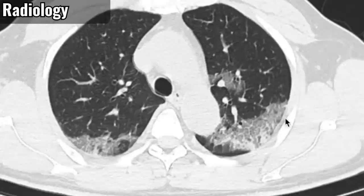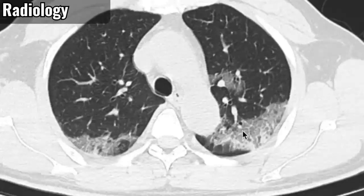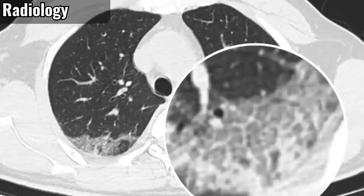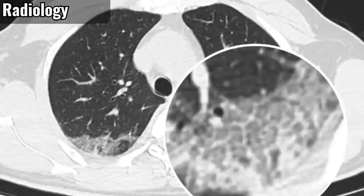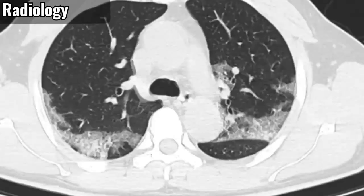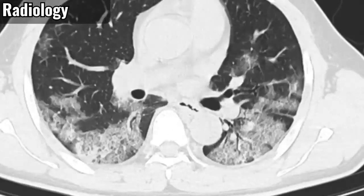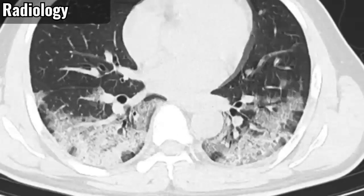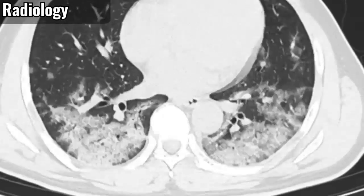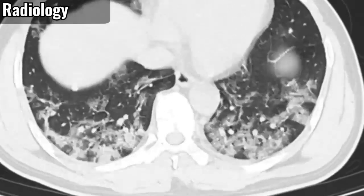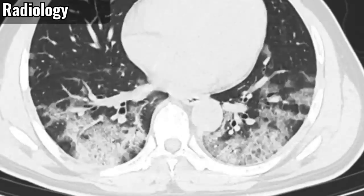Crazy paving refers to this pattern with septal thickening on top of a background of ground glass opacity. Also notice in this case that there are bilateral infiltrates with crazy paving that's predominantly peripheral and posterior, along with a number of other locations with more rounded findings.